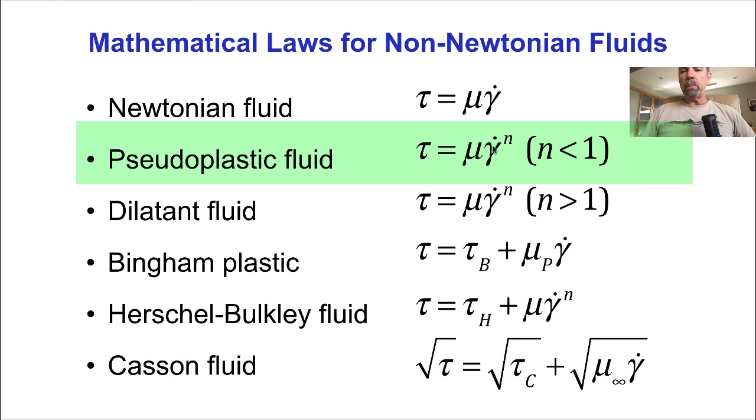So we can see here for the pseudoplastic fluid and the dilatant fluid, tau is proportional to the power of gamma dot, where in the pseudoplastic fluid the power n is less than 1, and in the dilatant shear thickening fluid the power n is greater than 1.